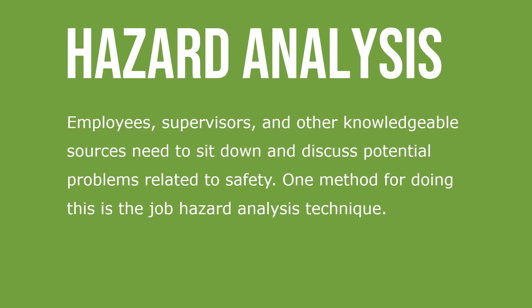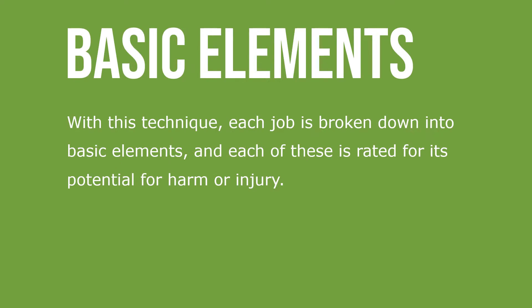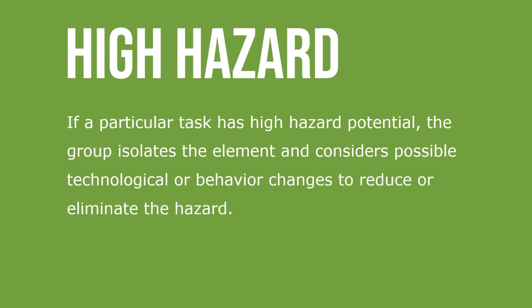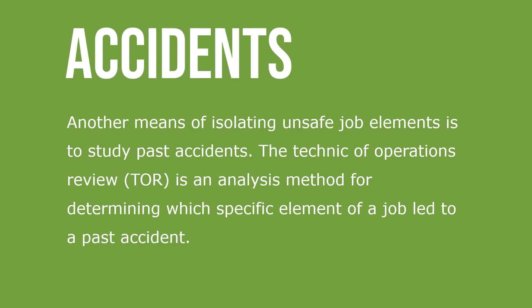One method for doing so is the job hazard analysis technique. With this technique, each job is broken down into basic elements, and each of these is rated for its potential for harm or injury. If a particular task has a high hazard potential, the group isolates the element and considers possible technological or behavioral changes to reduce or eliminate the hazard.